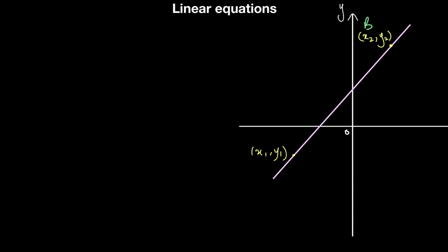Let's say we have a straight line with the points A and B. How do I find the distance between A and B — in other words, how do I find the shortest distance or the length of this line segment AB? We've learned earlier something called Pythagoras's theorem.